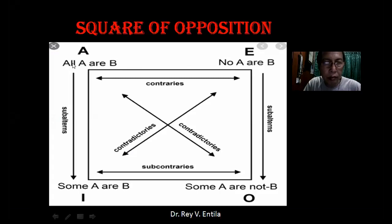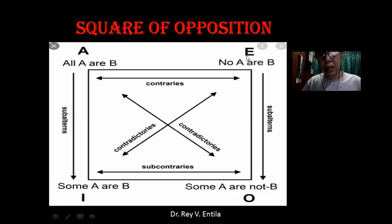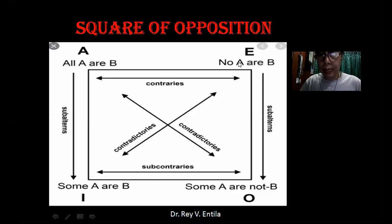All A are B — so universal means 'all.' And then I is the particular affirmative: some A are B. We have E, which is a universal negative, together with O, which is a particular negative, from the Latin term 'nego' — to negate or deny.